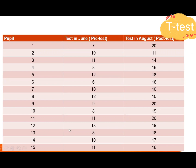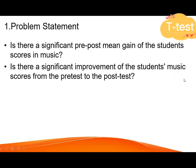This is just an example. We have the pre-test results here for pupils one through fifteen. At the end of August, after the intervention, we have the result of the post-test. The problem statement asks: is there a significant pre-test to post-test mean gain in the student scores in music?